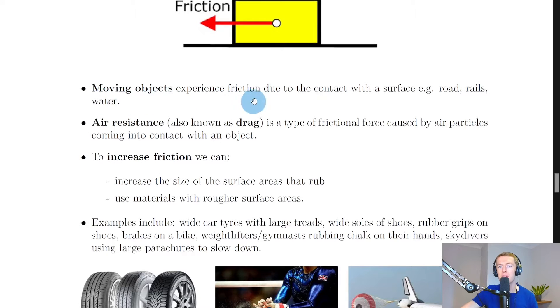Moving objects experience friction due to the contact with a surface. For example, road, rails, or water. It could be a vehicle on the road, a train on a train track on the rails, or a boat on water.